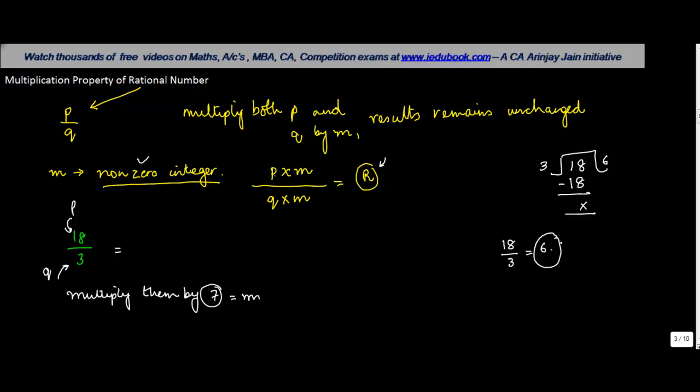Let's multiply both of them by 7 and see whether our result remains unchanged. What do we do? We multiply 18 into 7 divided by 3 into 7. 7 times 8 gives you 56, so you have 5 as carry. 7 times 1 gives you 7 plus 5 gives you 12. 3 times 7 gives you 21.